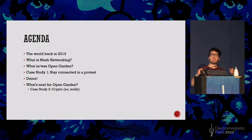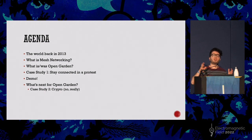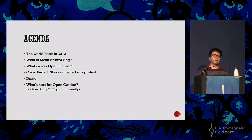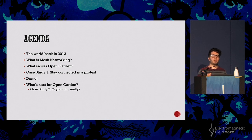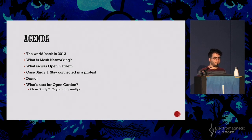Before we get started, let me give you a brief agenda so you know what you're signing up for, and if you don't like it, you don't have to wait 20 minutes to find out. First, I'll talk about how the world was back in 2013. Then I'll give a brief introduction on what mesh networks are and their evolution across time. Then I'll talk about what is or was Open Garden. I'll give a bit of a case study of staying connected in a protest, a brief demo, and then we'll talk about what's next for Open Garden. There is a case study that involves crypto — it sounds weird in this particular space, but I'll talk about it.